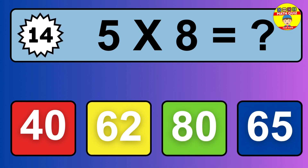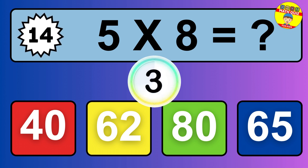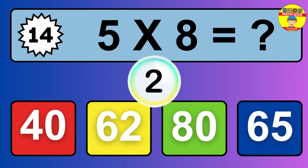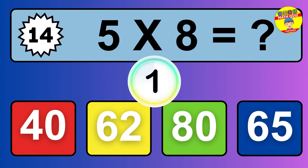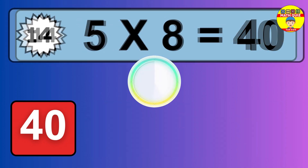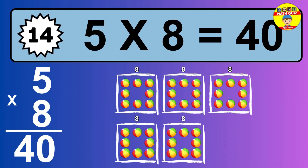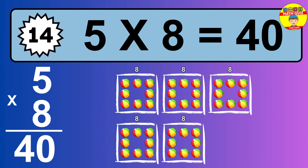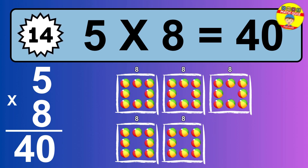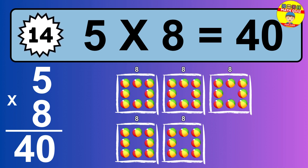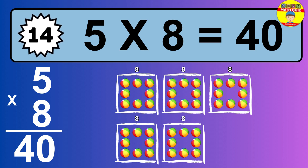Question 14. 5 times 8 equals what? The answer is 5 times 8 is 40. To calculate, we have 5 groups with 8 balls each one. So, how many balls do we have? 40 balls.